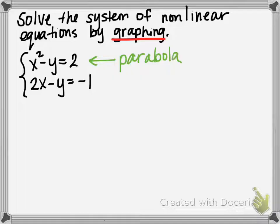And the second equation has a degree of 1, so the second equation is linear and will be a line. We are looking for the intersection of a parabola and a line.